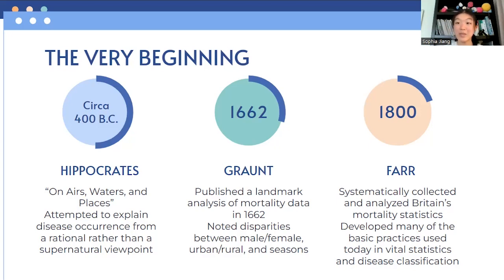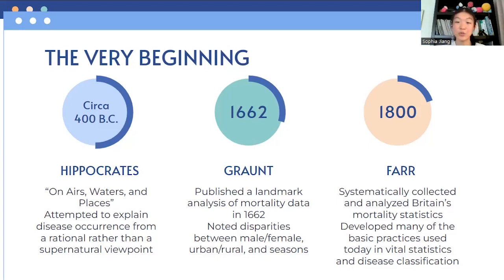Next we have John Graunt in 1662. John Graunt published a landmark analysis of mortality data that year. He took this mortality data and analyzed it. For the first time, somebody looked at the distributions of birth, distributions of death, and distributions of disease. Not only that, he noted disparities between disease occurrence in males and females, between urban and rural areas, and between the seasons as well.